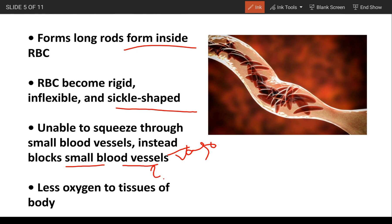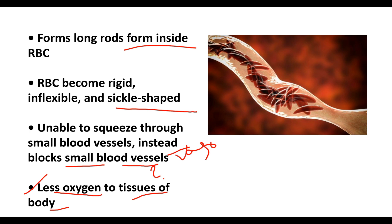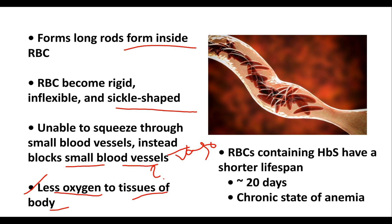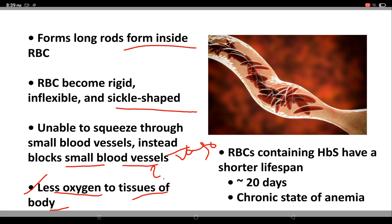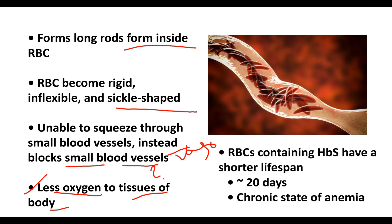This leads to less oxygen delivery to the tissues of our body. These sickle cells have a shorter lifespan than normal RBCs — that is 20 days — and contribute to a chronic shortage of RBCs, leading to anemia.